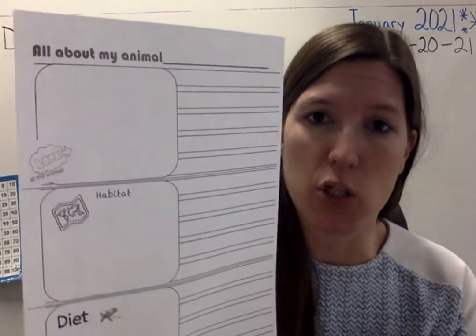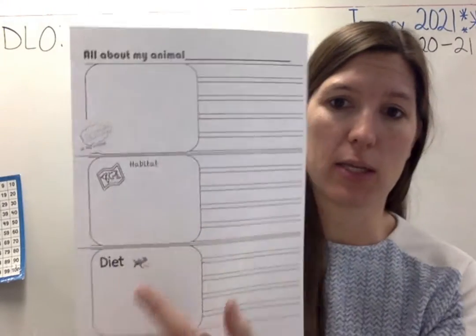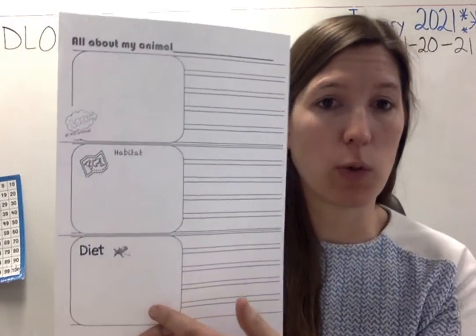Our final project for animals will look like this. You'll have three boxes, you'll draw three pictures, and then you'll write three sentences.